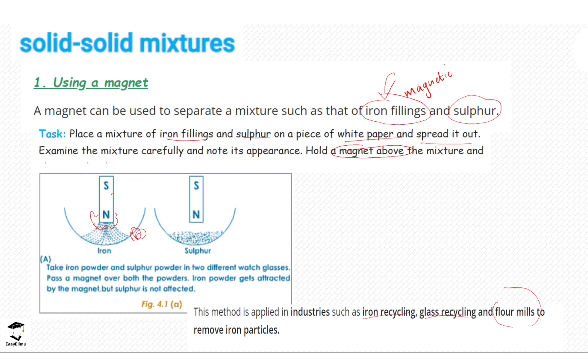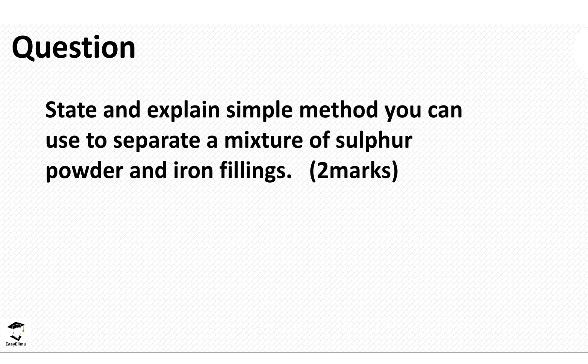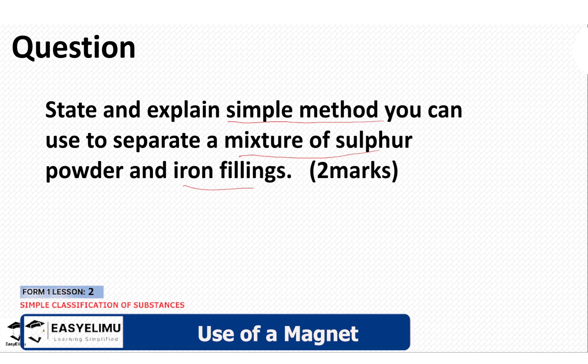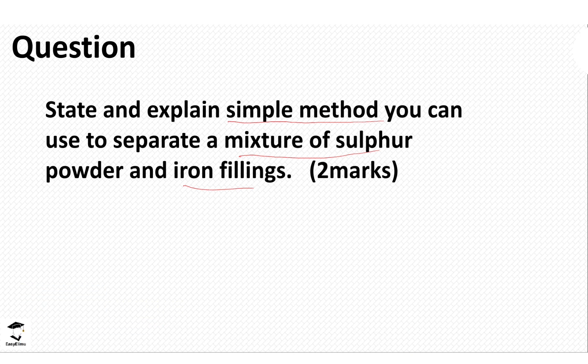So let's look at one question in regards to what we have been discussing. State and explain a simple method that you can use to separate a mixture of sulfur and iron filings. So this question requires you to state the method and also to explain the method. So it is important for you to be able to explain the method that is done in the lab. So the method is going to be use of a magnet or magnetism.